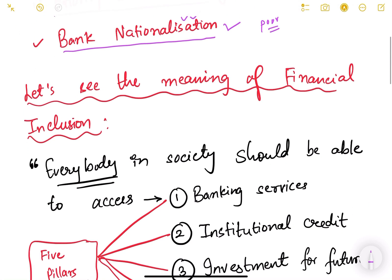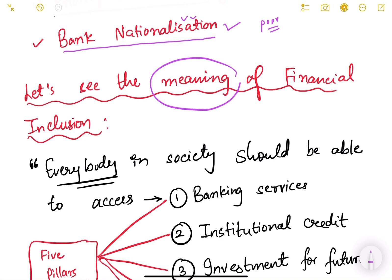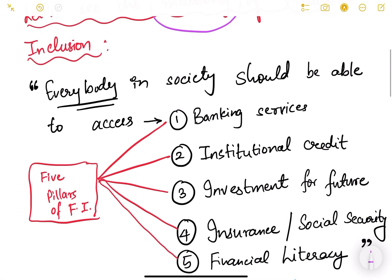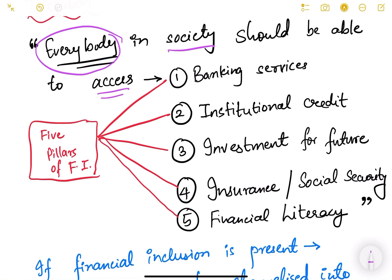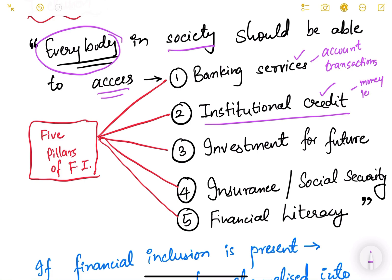So that banking system should not just be accessible to rich people but also to poor people — that is the reason why banks were nationalized in two phases. Now in this video we'll see the basic meaning of financial inclusion. Financial inclusion basically means that everybody in the society should be able to access these five things. One is banking services — meaning to be able to open an account and have transactions through an account. Two is credit — institutional credit — as we have seen that in rural areas poor people mostly depend on money lenders which are non-institutional forms of financing.